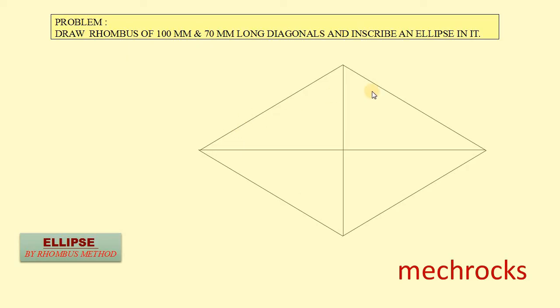Now locate the mid points of all these four sides. First we locate the mid point of this side and mid point of this side and mid point of this side. Name them as A, B, C, D.